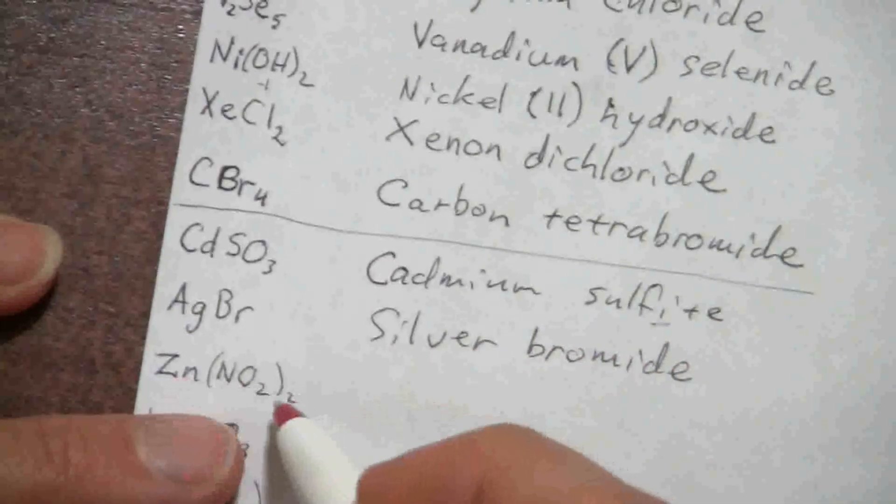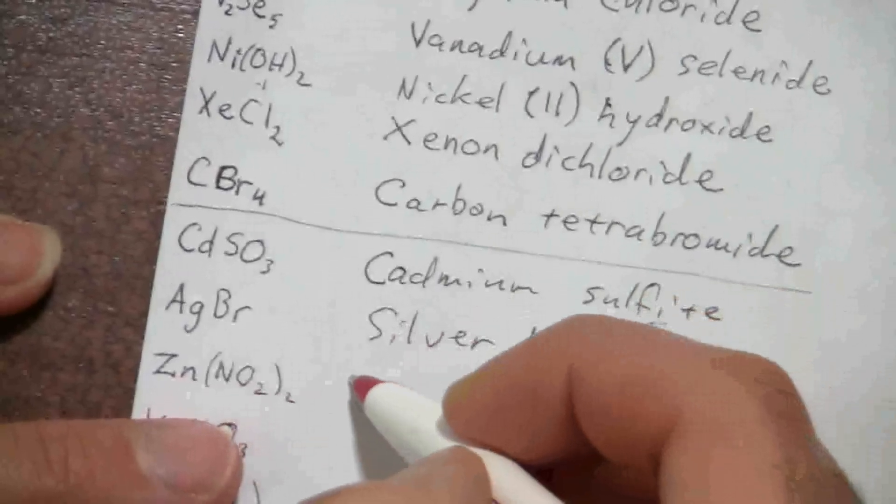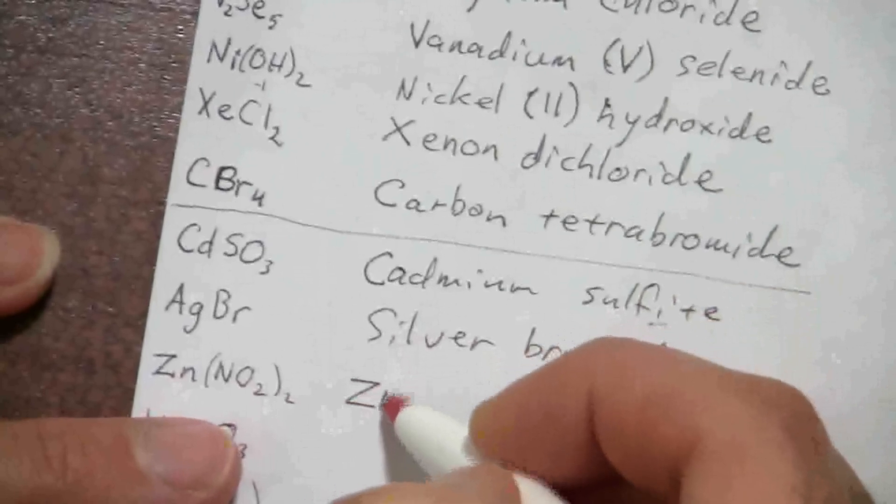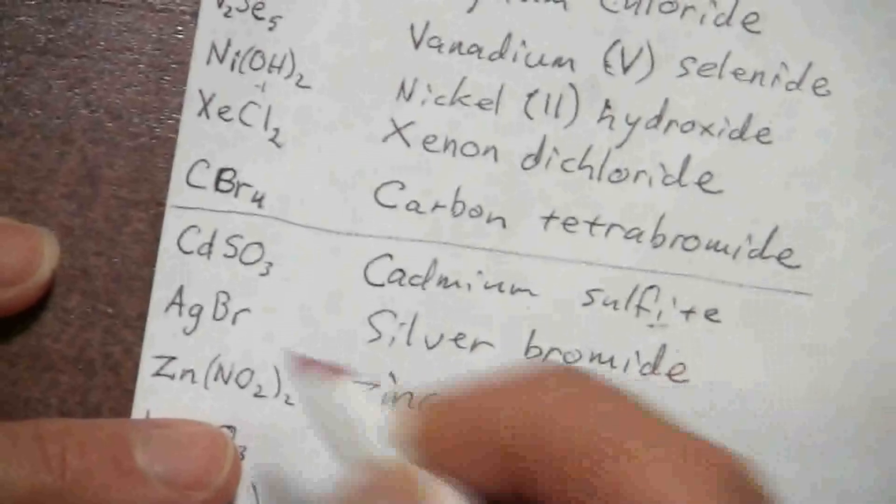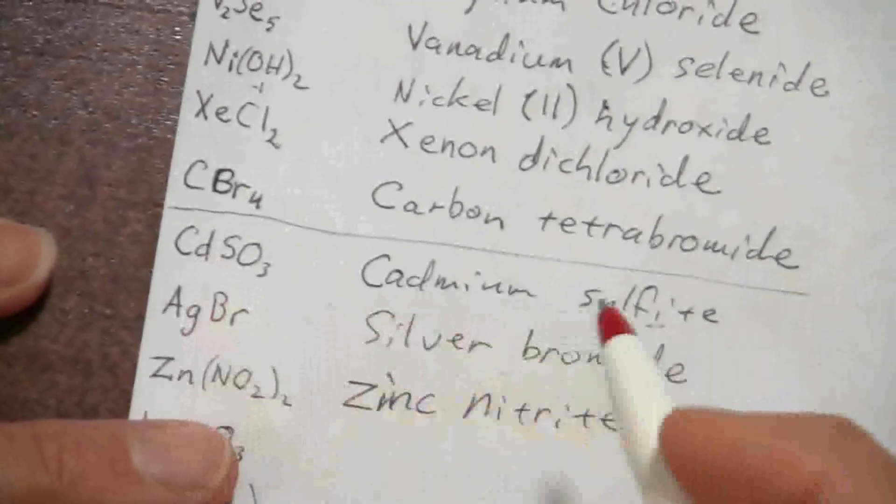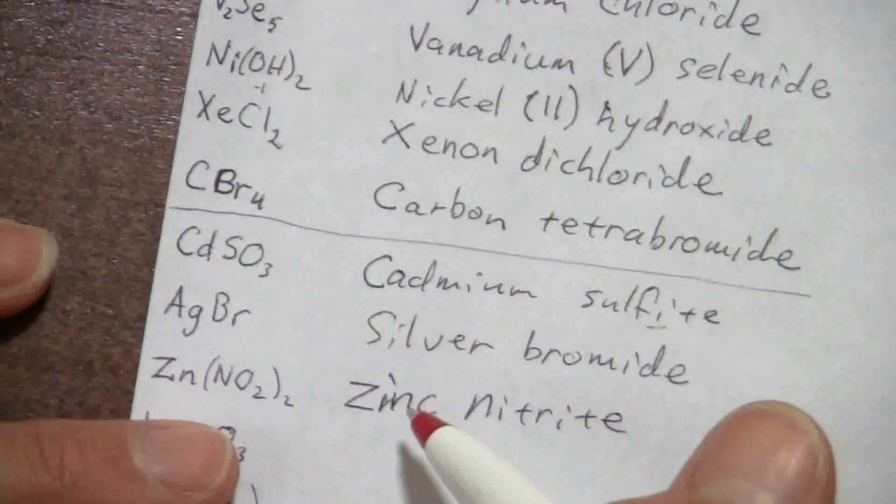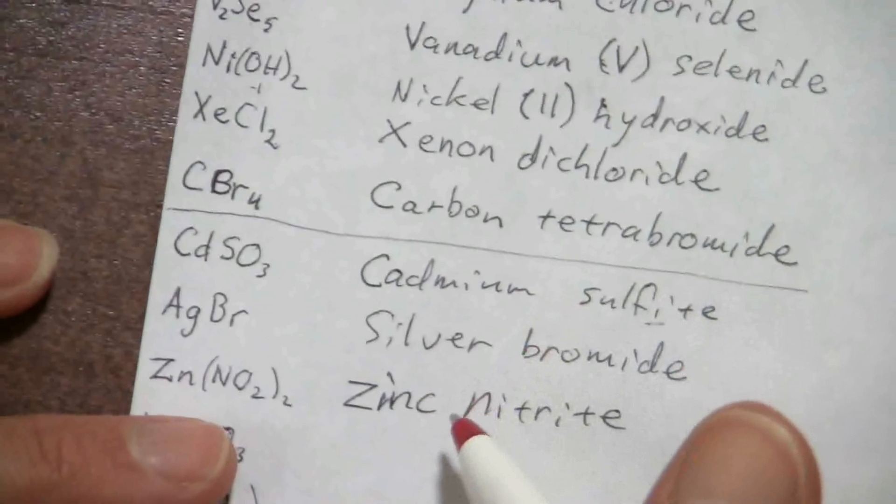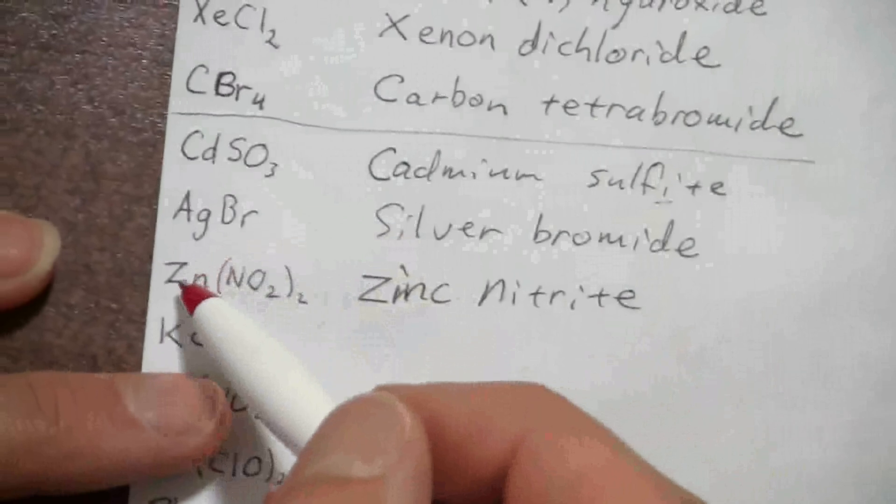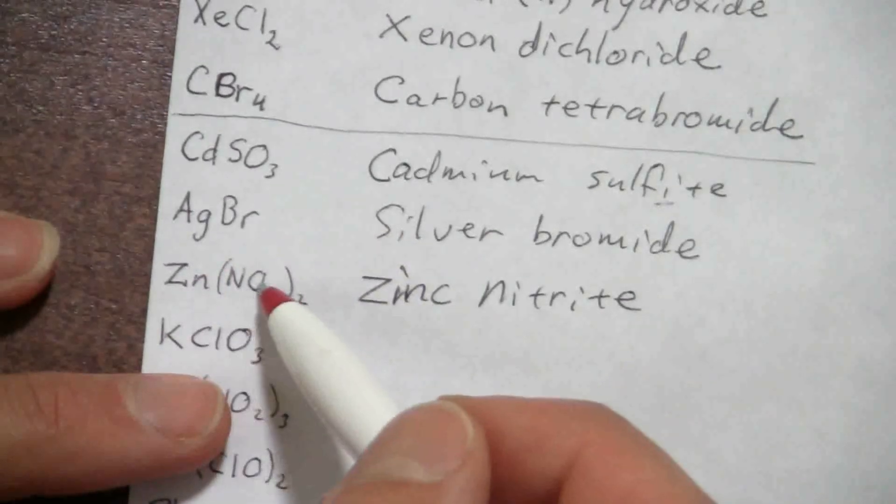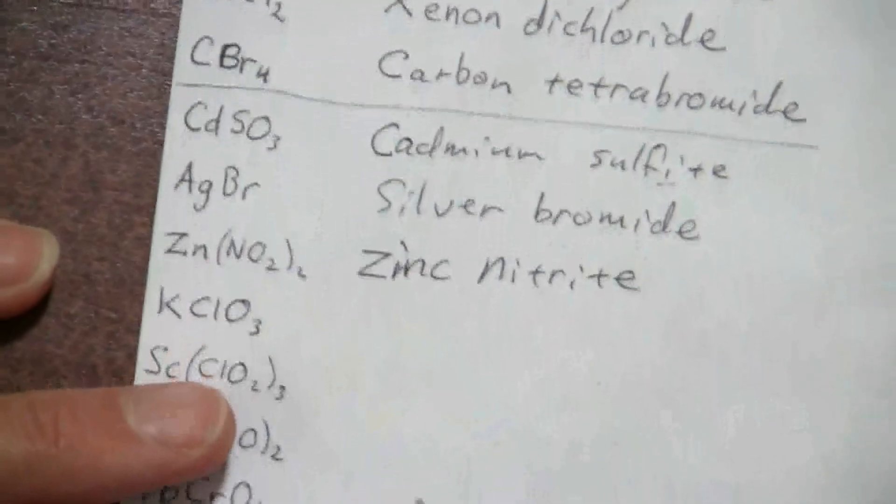Here we have zinc and NO2. NO2 is nitrite, so this is zinc nitrite. Again, even though these are transition metals, because they're the exceptions to the rule, these ones we don't have to show the Roman numerals. In fact, we shouldn't show the Roman numerals. Zinc is always positive two, so the nitrite requires two of them at a negative one each to balance that charge.